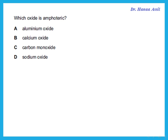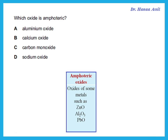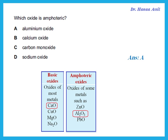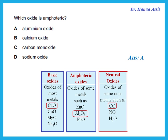Which of these oxides is amphoteric? We said the examples we need to know are zinc oxide, aluminium oxide, and lead oxide. So aluminium oxide is amphoteric — that's the answer. What about calcium oxide? Calcium oxide is a base. Carbon monoxide is actually neutral. Sodium oxide is a base.